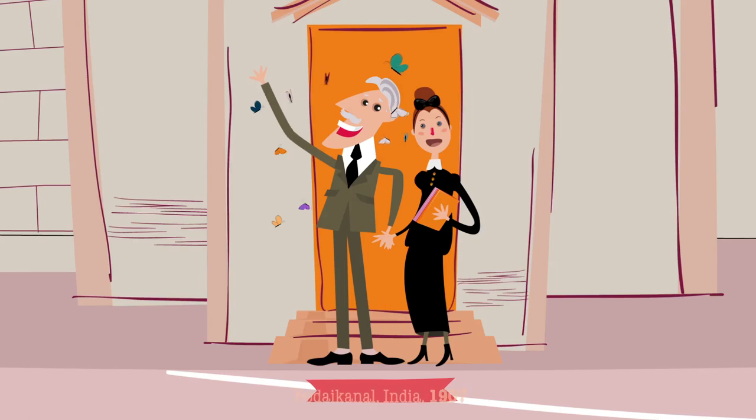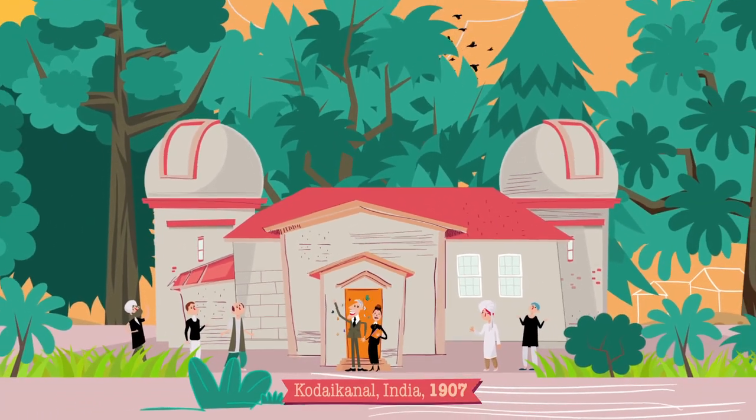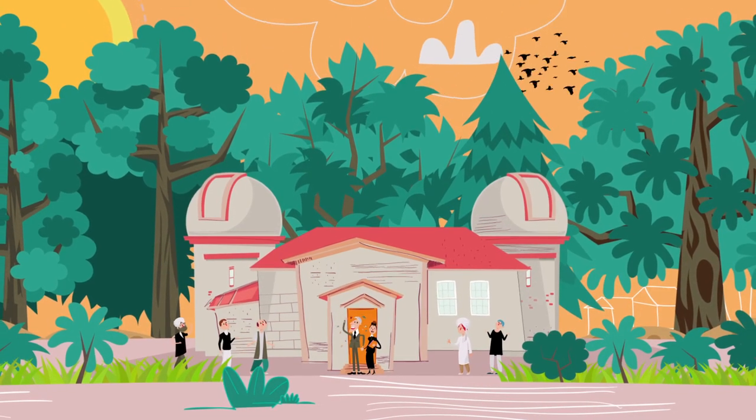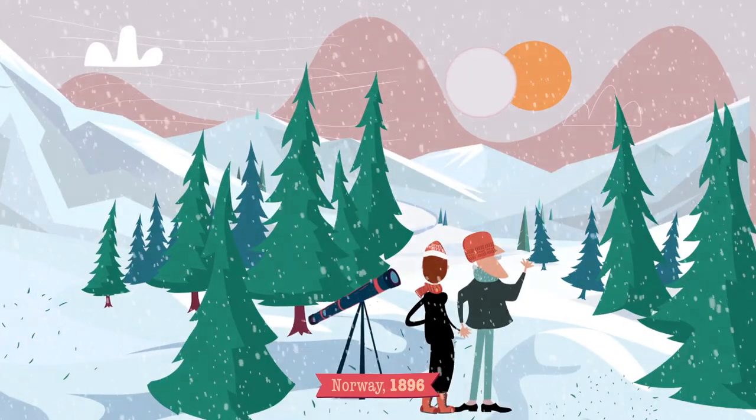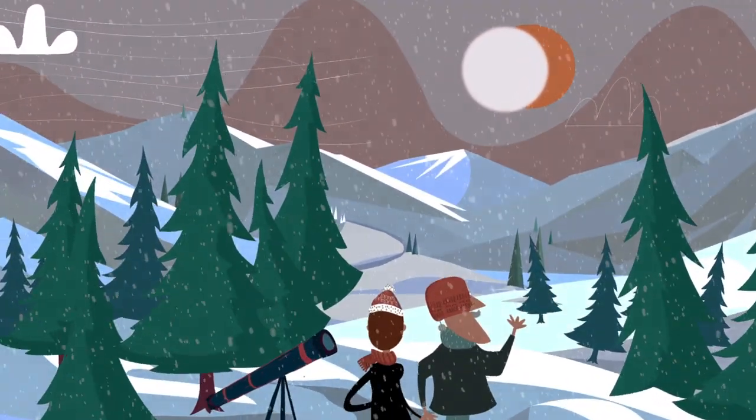John Evershed and his wife Mary Evershed, also an astronomer, spent most of their scientific careers at the Kodakainal Observatory in India. John worked as an industrial chemist, but he enjoyed observing the sun since his childhood.